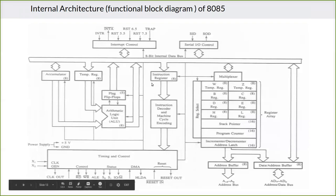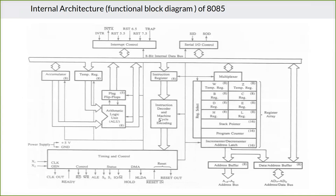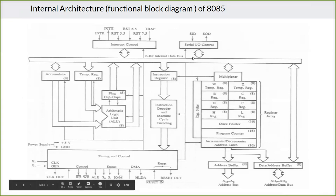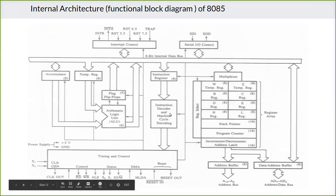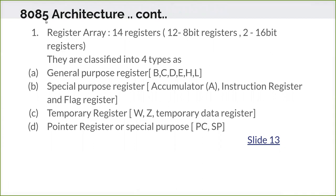In the functional block diagram we also have the control timing section, the accumulator, temporary register, flag flip-flops, and the instruction decoder. The instruction is fetched and placed in the instruction register, then decoded by the instruction decoder, and executed by the machine cycle encoder. Now we will see one by one what is in the register array. There are 12 eight-bit registers and 2 sixteen-bit registers, and all of these are mostly available to the user for programming.